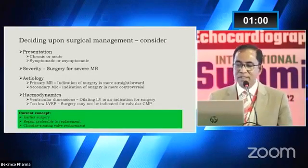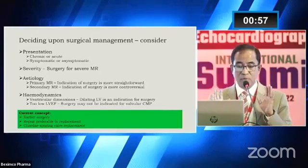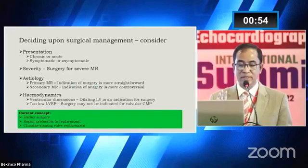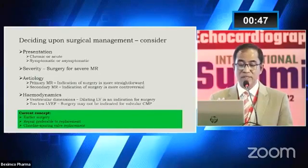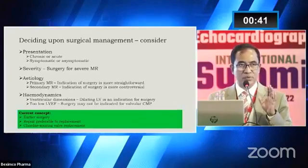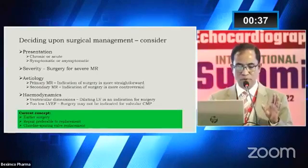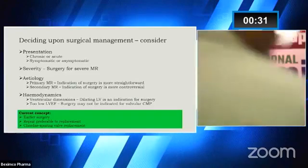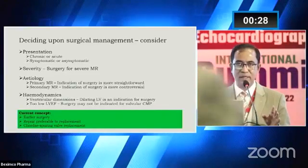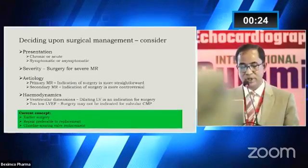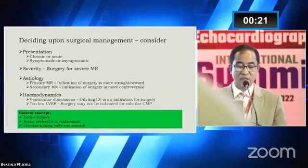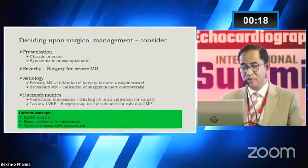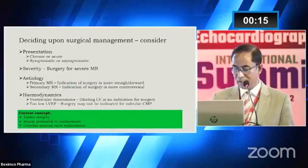When deciding on surgical management, we have to consider several important factors: whether the MR is chronic or acute, whether the patient is symptomatic, and the severity — severe MR is an indication for surgery. Regarding etiology, for primary MR the indication is more straightforward, whereas for secondary MR it is more controversial. Hemodynamic parameters such as ventricular dimensions and ejection fraction are also important. If ejection fraction is very low, prognosis is poor and the patient may not benefit from surgery. The current trend is to advocate earlier surgery, and mitral valve repair with chordal-sparing technique is the state-of-the-art approach.